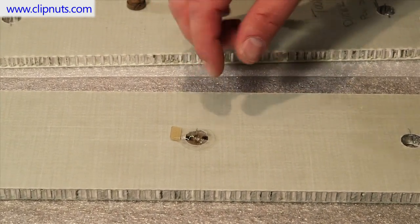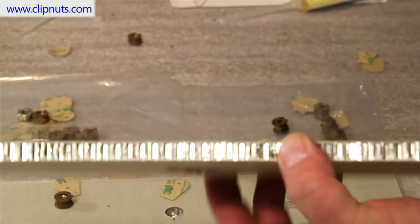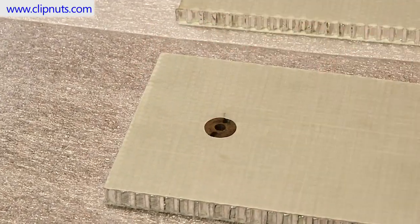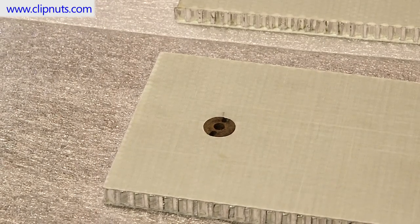Last step, once the adhesive dries, remove the installation tab from the front and masking tape from the back. Your insert will be flush mounted on both sides, ready for a bolt to attach the honeycomb panel.